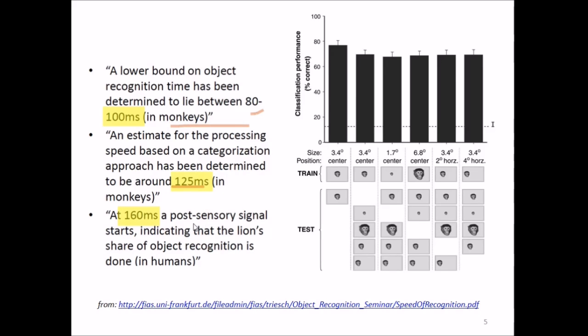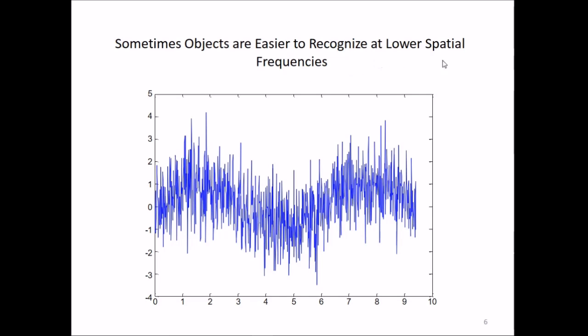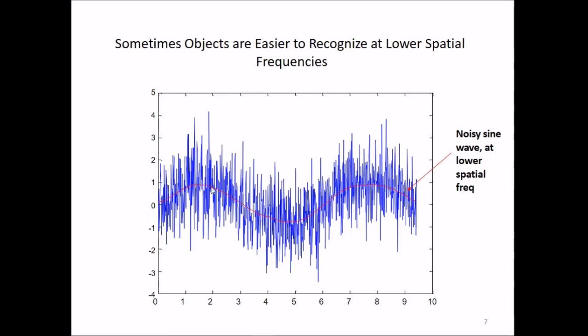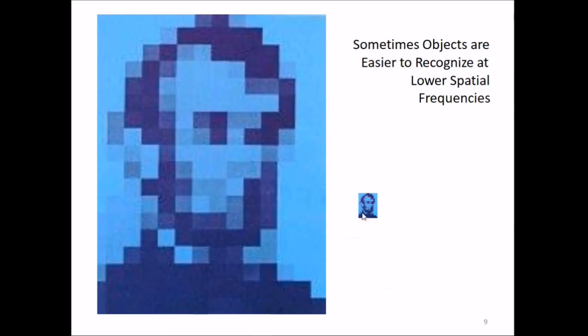Sometimes objects are easier to recognize at lower spatial frequencies. We can easily determine via a noisy sine wave that lower spatial frequency will be enough to recognize objects. This is also an example—sometimes objects are easier to recognize at lower spatial frequencies. We may not be able to recognize at high frequency, but if we make it small we'll be able to recognize it more. These are all things related to our human vision.